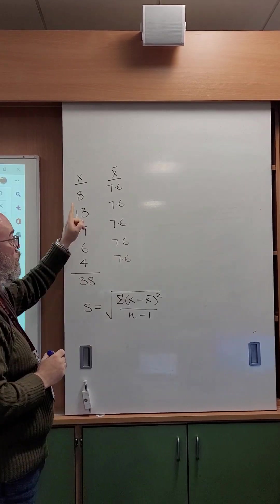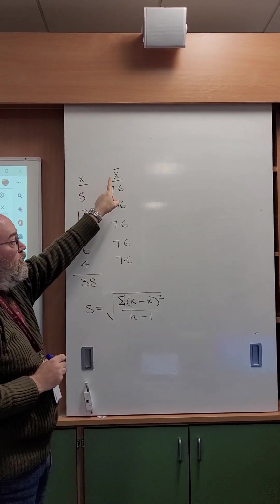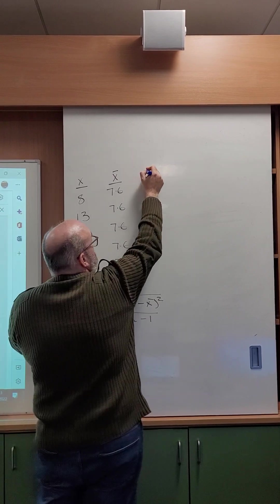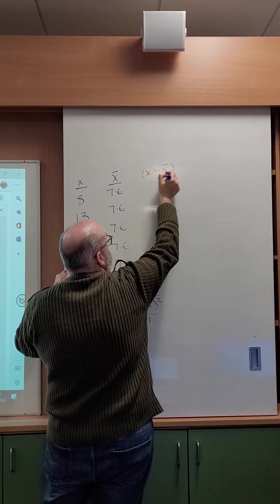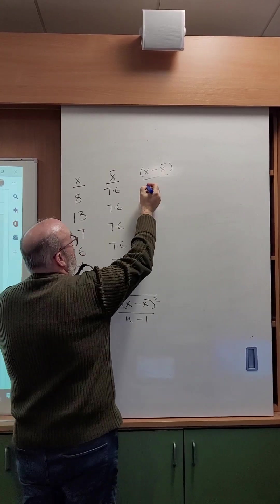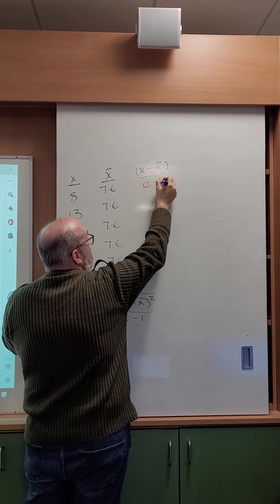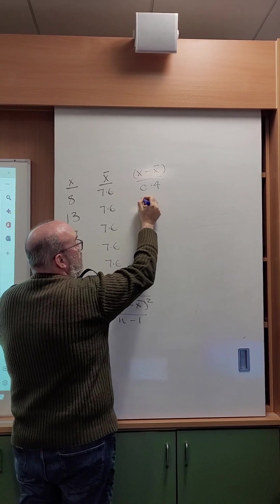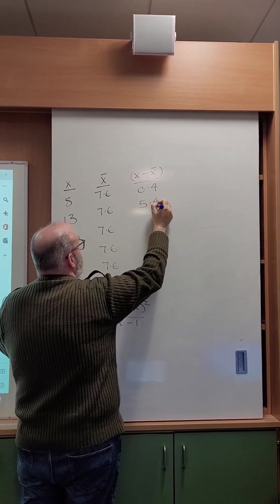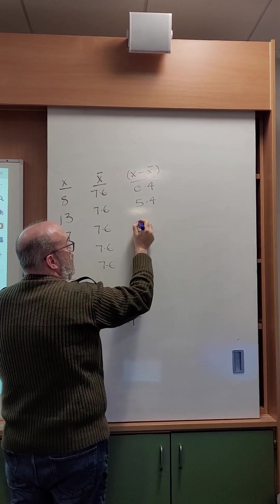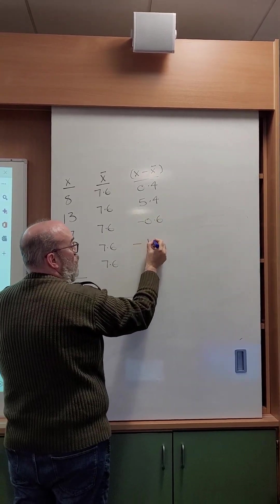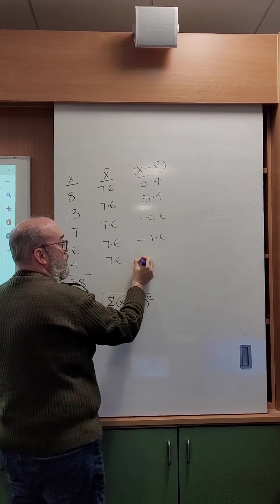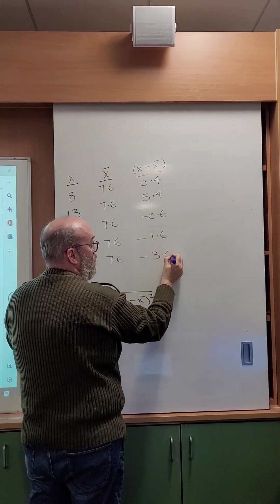And then we just simply do the number in this column take away the number in this column. So X minus X bar will give me 0.4, 5.4, minus 0.6, minus 1.6 and minus 3.6.